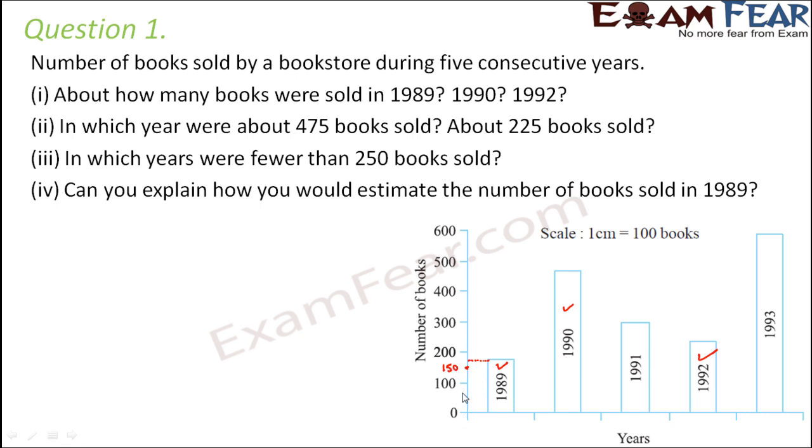Here in this case 10 units represent 100 books. So here also 10 units represent 100 books. That means 5 units will represent 50 books. So 100 plus 50 that is 150. And this point actually lies between 150 and 200, that means it lies at 175. So in 1989, the number of books sold were 175.